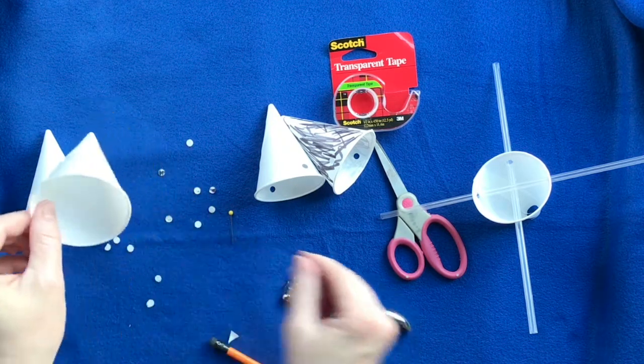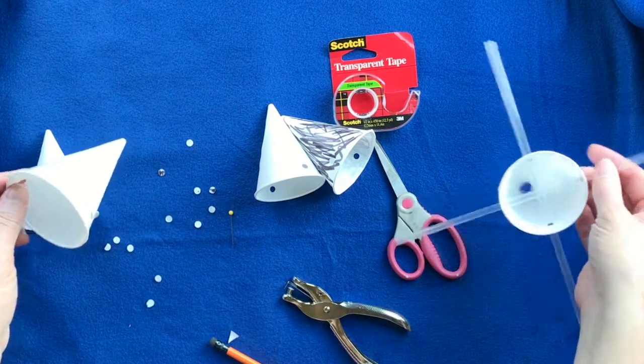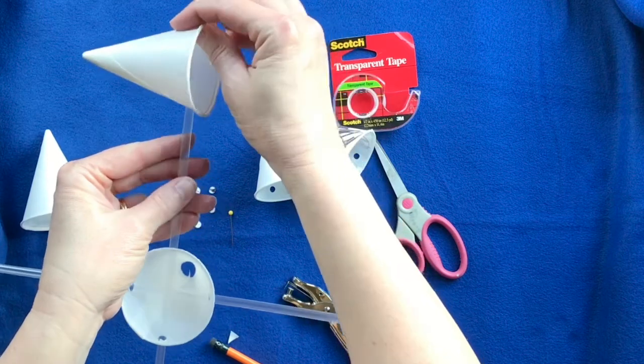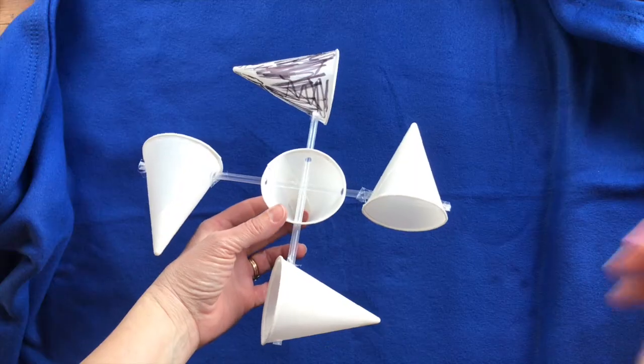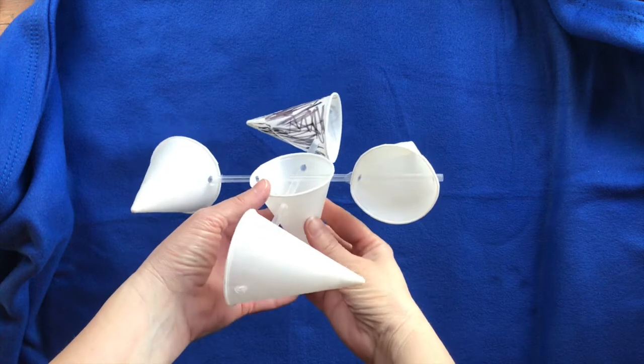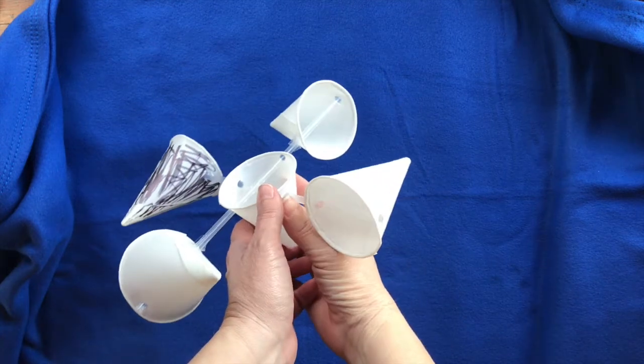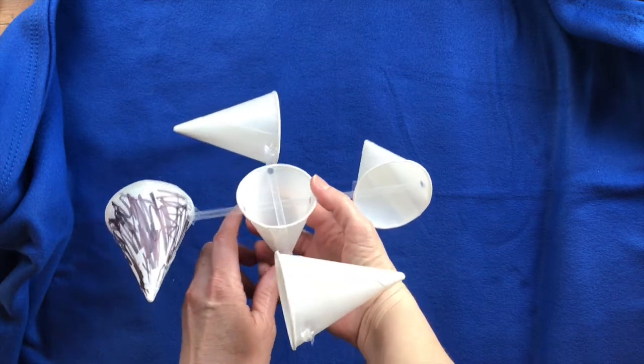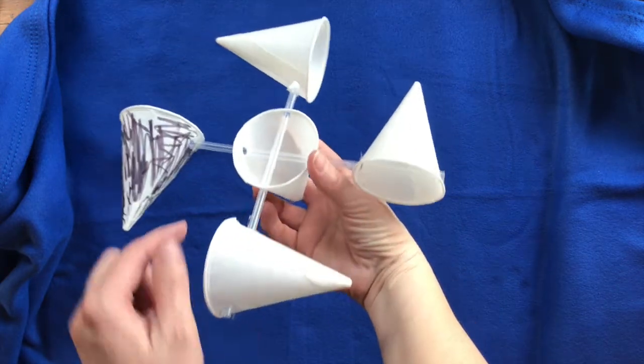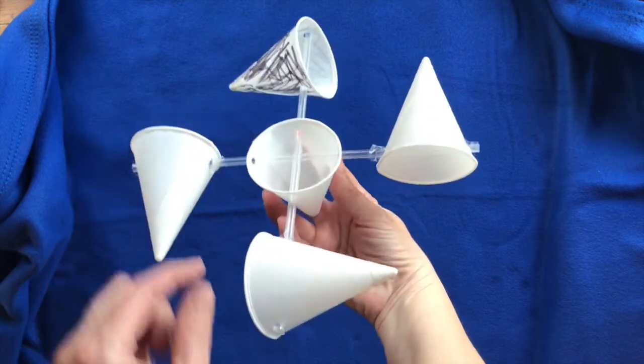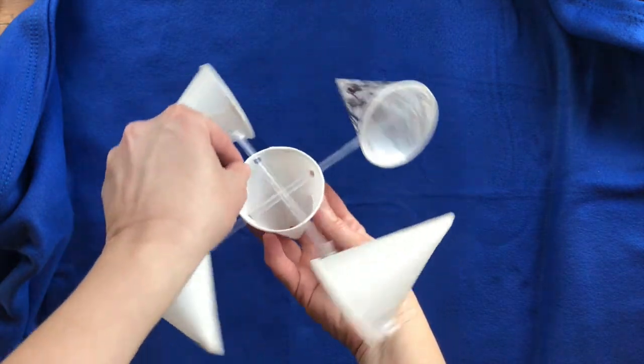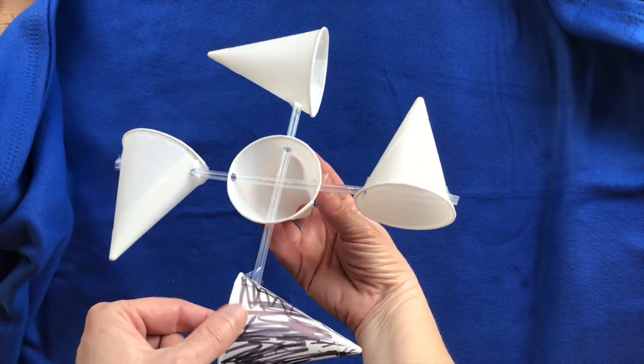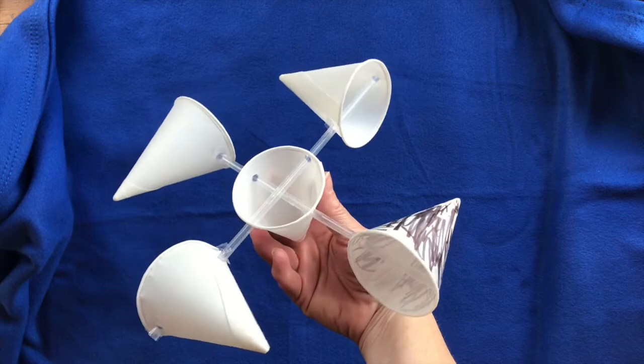Okay, once you've got all four of the cups punched, this is going to slide onto the end of one of your straws. Okay, so you're going to attach the cups to the end of the straws like this. Secure them with some tape. You'll want to make sure that they're all facing the same direction. So I would take and turn it so that you can look and see that each one has the open end of the cup facing the same direction like that. Again, just secure it with some pieces of tape.